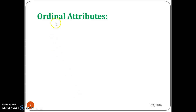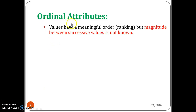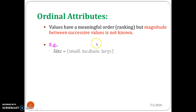Next is ordinal attributes. An ordinal attribute has possible values that have a meaningful order or ranking among them, but the magnitude between successive values is not known or cannot be calculated. For example, consider size.